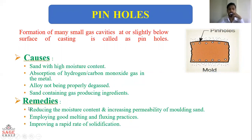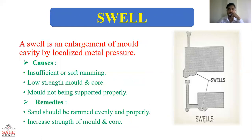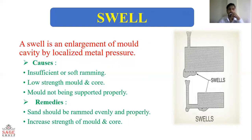The next defect is swell. Swell is an enlargement of the mold cavity by localized metal pressure. Causes: insufficient or soft ramming, low strength of mold and core, and mold not being supported properly. Remedies: ram evenly and properly, and increase strength of mold and core.